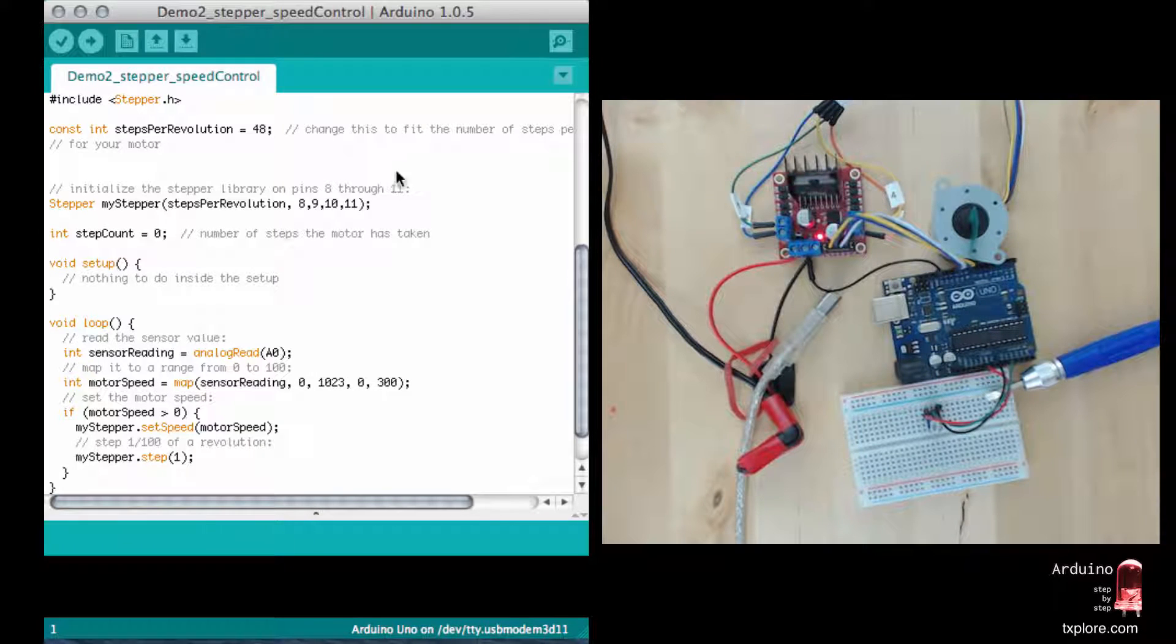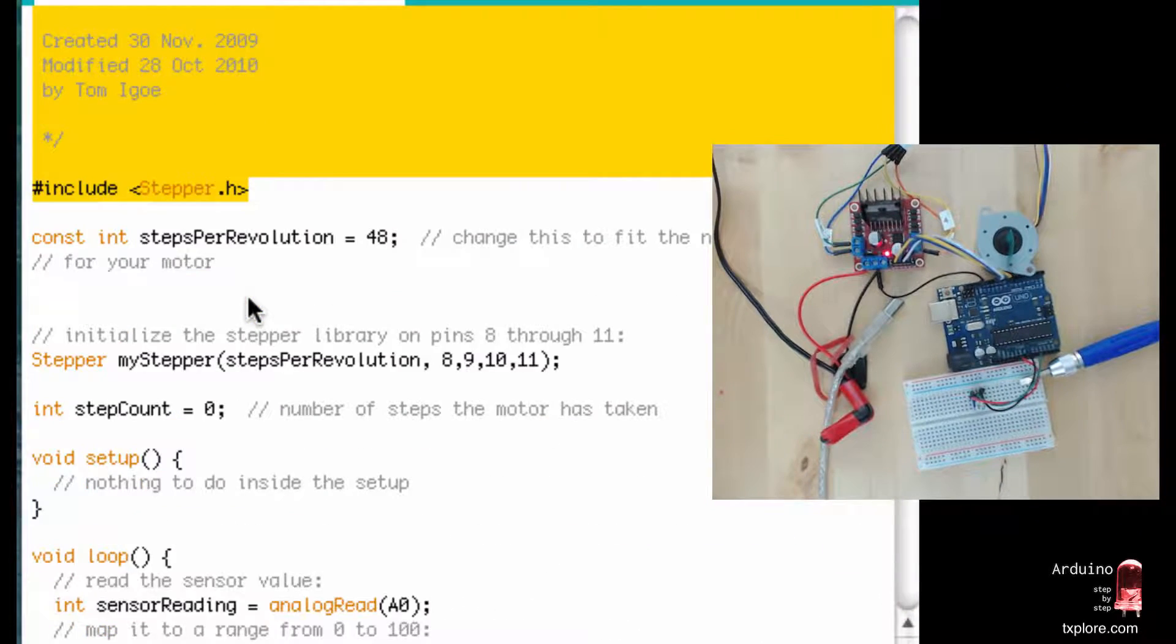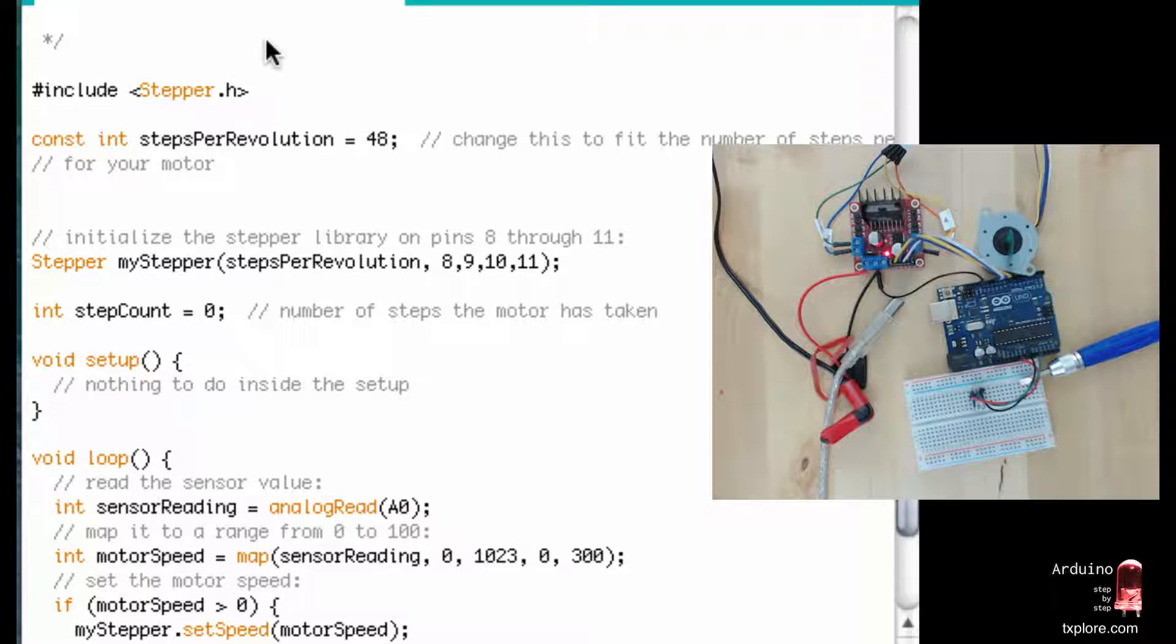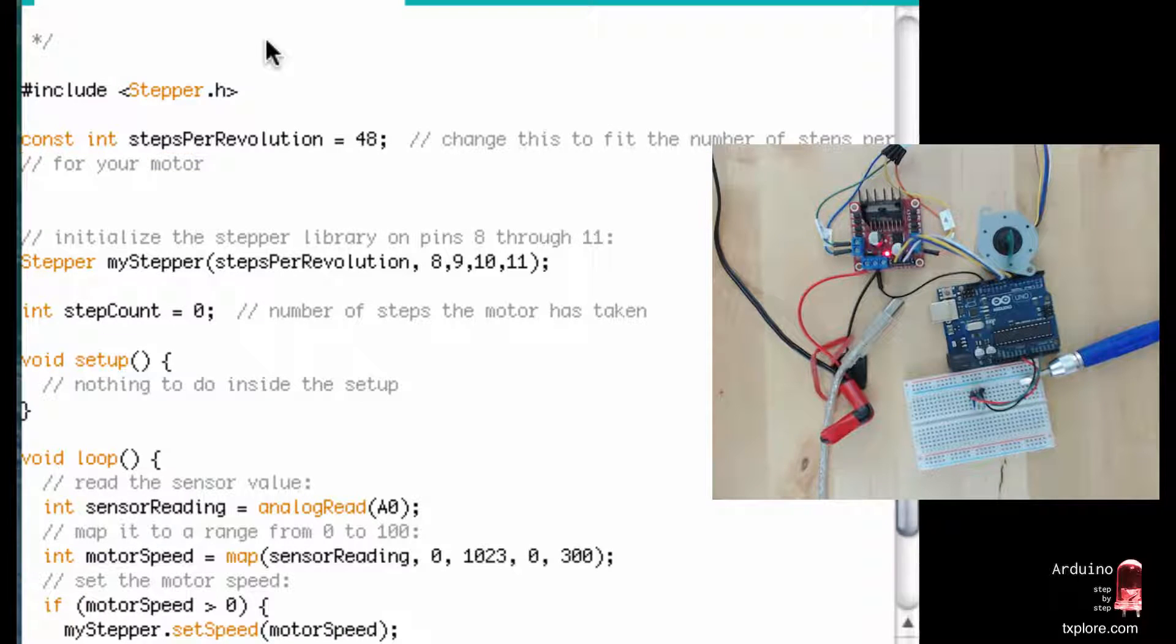So in the sketch we have pretty much what we saw in demo 1. We use the stepper library just like before, we set the number of steps per revolution, we initialize the object exactly the same way as before. Don't do anything in the setup.